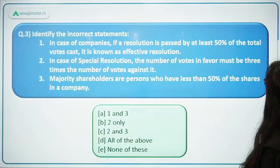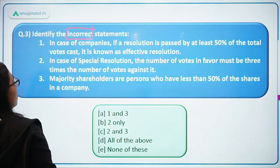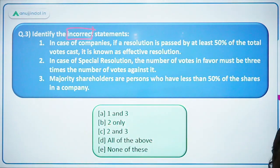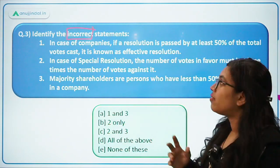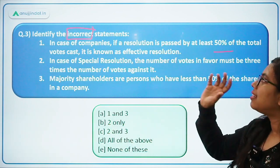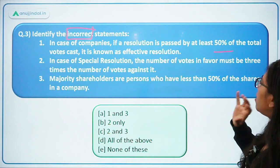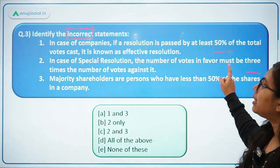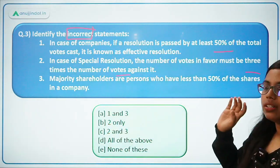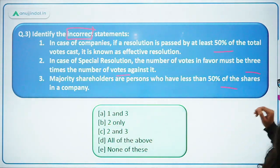Moving forward to the third question: identify the incorrect statements. First, in case of companies, if a resolution is passed by at least 50% of the total votes cast, it is known as an effective resolution. Second, in case of special resolution, the number of votes in favor must be three times the number of votes against it. Third, majority shareholders are persons who have less than 50% of the shares in a company. You need to mark the incorrect statements.